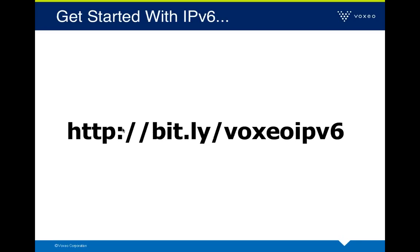To get started, there's a resource page at bit.ly/voxeoIPv6. If you have a home office and want to try IPv6, Hurricane Electric offers a service called tunnelbroker.net, which lets you easily create a tunnel from your home network out to the public IPv6 network. I've got blog posts walking through the process, plus tutorials on IPv6 and other materials at that resource page.